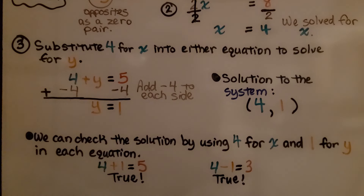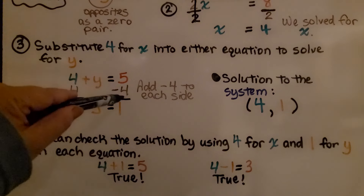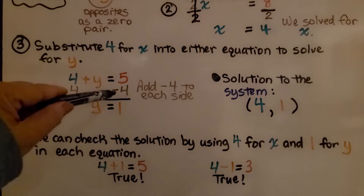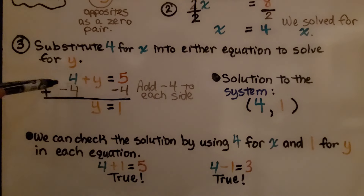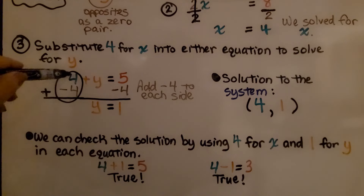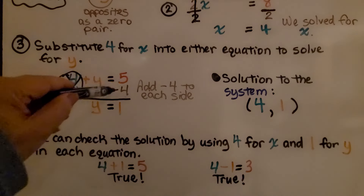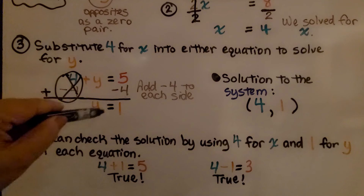Now we substitute four for x into either equation to solve for y. We have four plus y equals five. We're going to add a negative four — it's the same thing as subtracting four, but we're using the addition property. Positive four plus negative four makes a zero pair and eliminates it. Five plus a negative four equals one, so y equals one.